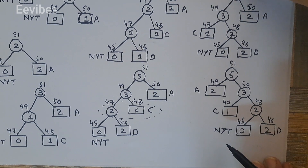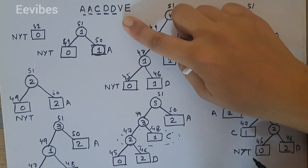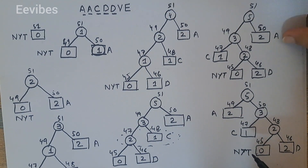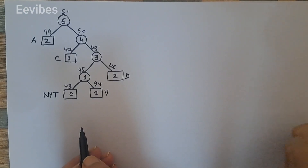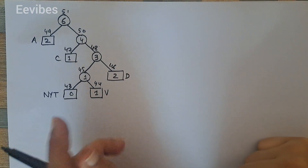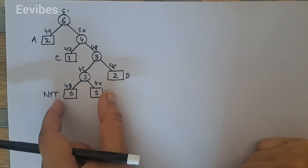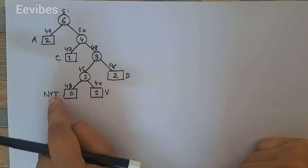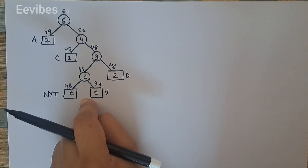The next symbol is 'v', which needs to be inserted in the tree. The NYT node splits into two new nodes for 'v', and we insert it. The next symbol in the string is 'e', so we generate two further nodes from the NYT node.